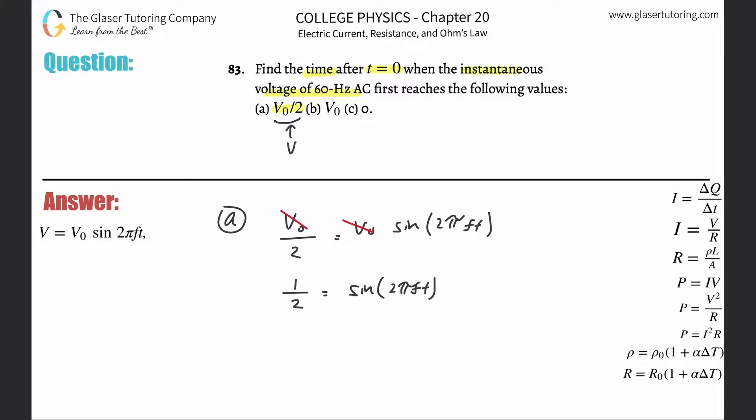Now what are we solving for? We're finding the time. How do we find that? Well, you got to get rid of the sine function. In order to get rid of the sine function on the right hand side, you got to do the inverse sine of both sides.